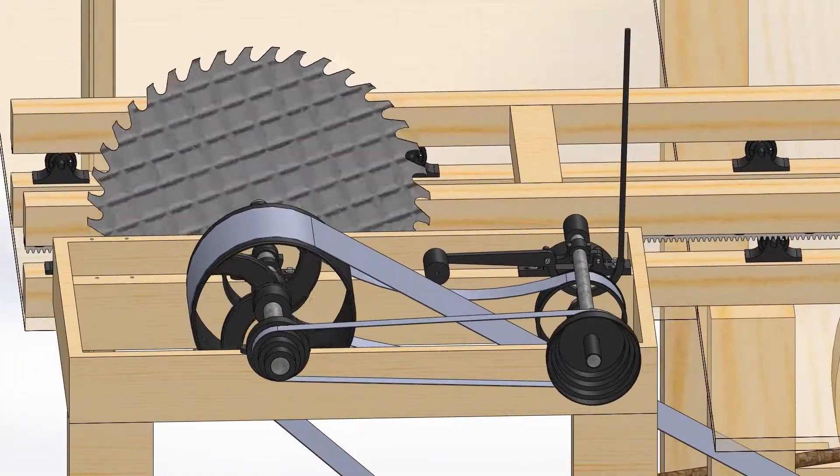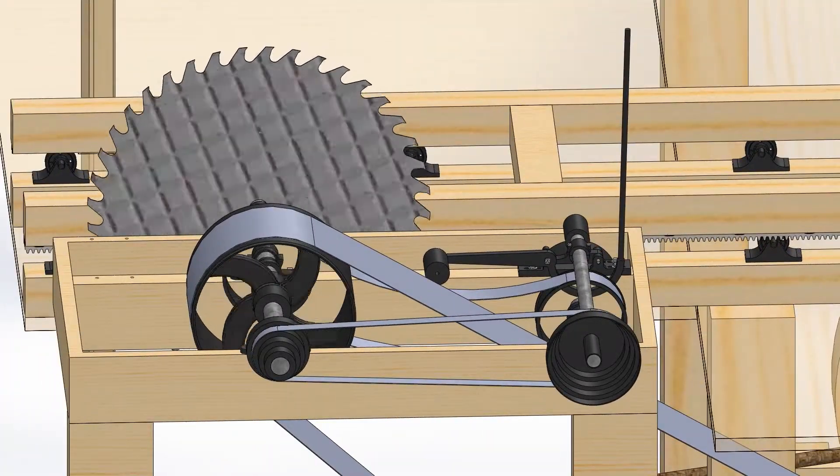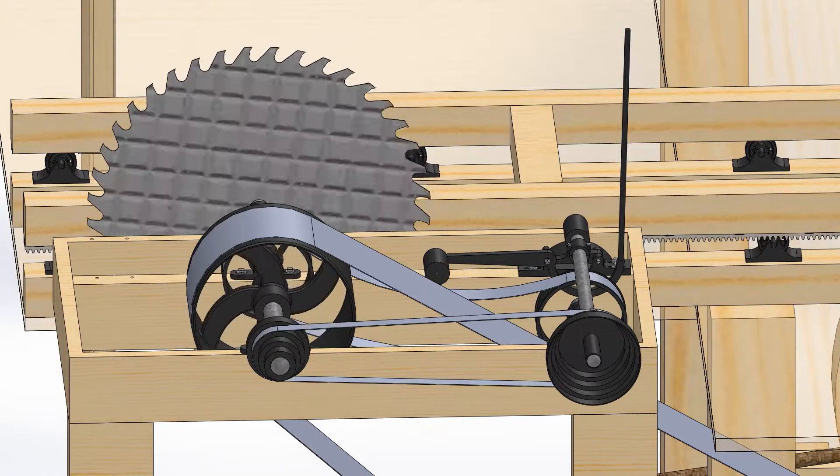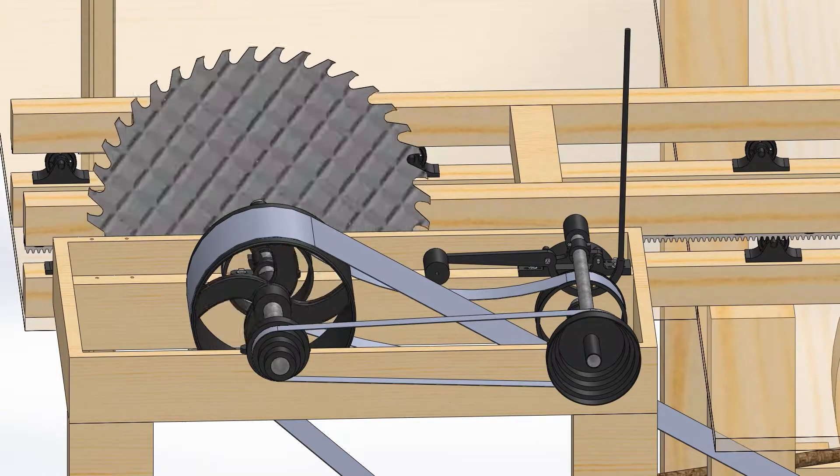When the control lever is in a neutral position, straight up and down, the friction wheel doesn't touch the pulley below it as a spring holds the housing just out of reach.